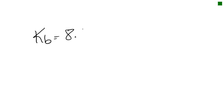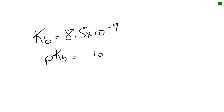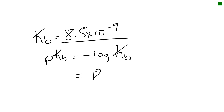With Kb = 8.5 × 10⁻⁹, we can also find pKb. Many acids and bases have their strength tabulated by pK rather than K. pKb = −log₁₀(Kb) = −log₁₀(8.5 × 10⁻⁹) = 8.07.